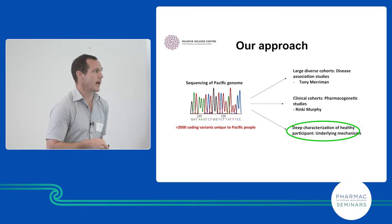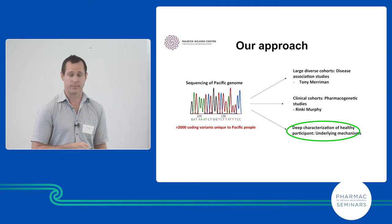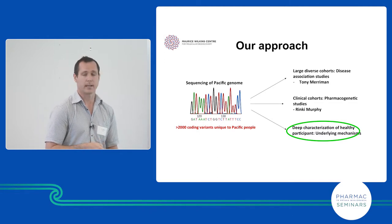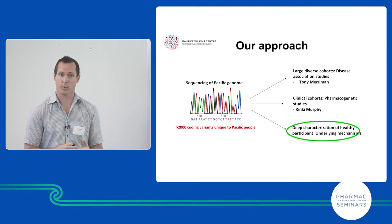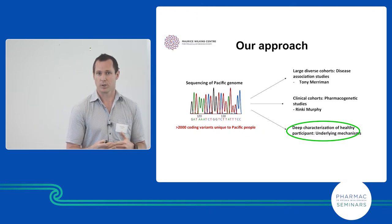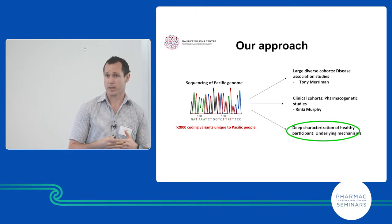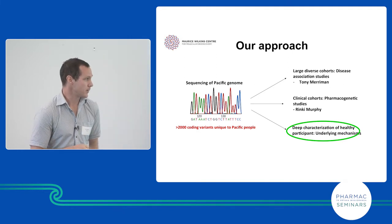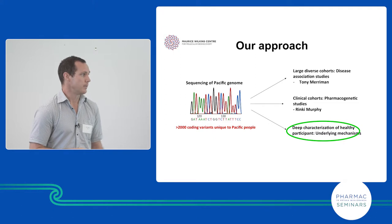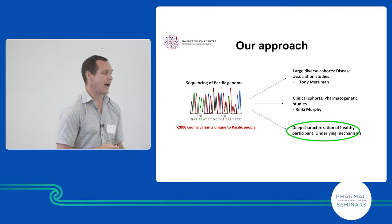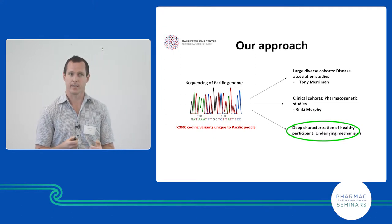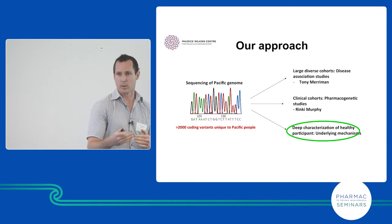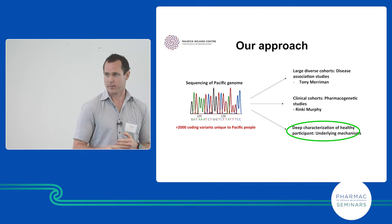This is a large cohort where we're looking at associations between these variants and disease risk with Tony. Rinki, who already spoke today, is looking at more clinical populations where we can look at the relationship between drugs, treatment options, and disease outcome. What I'm going to spend the next five to ten minutes talking about is our deeper characterisation of healthy participants, to try to understand underlying mechanisms before you get to a disease state — the prevention rather than treatment option.